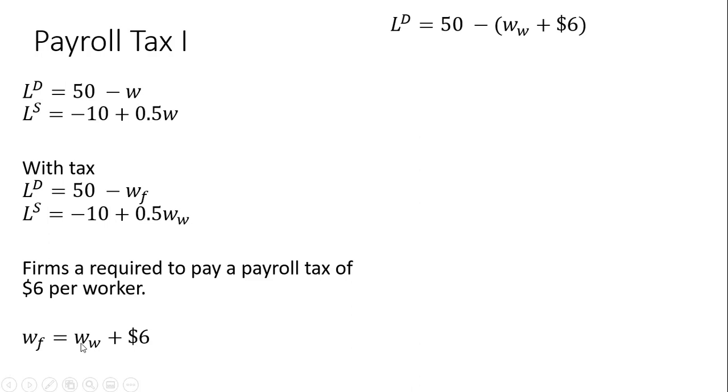So what I'm going to do then is take this wage of workers plus $6 and plug it into the labor demand equation. So where I have W_F, what is that when we have taxes? It's the wage of workers plus the tax. And then simplify. So we got -$6 and $50 is $44 and just minus the wage of workers.